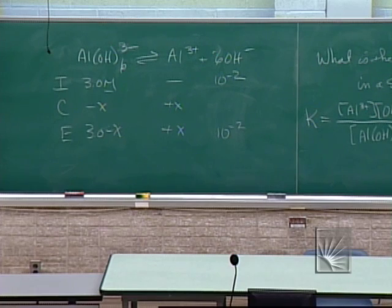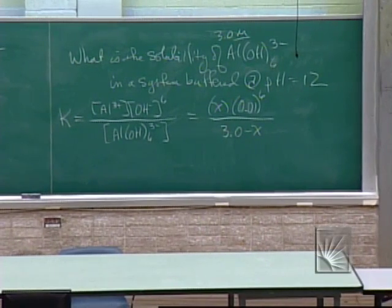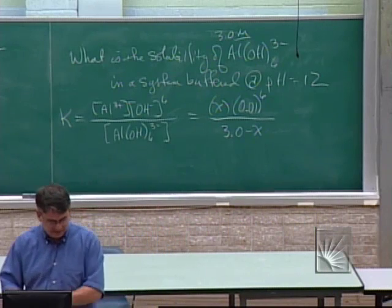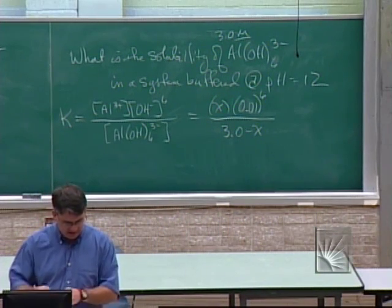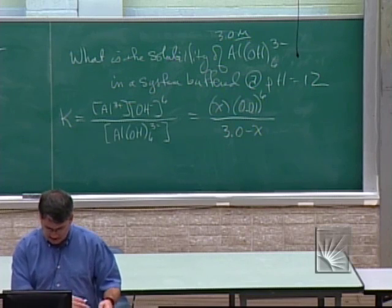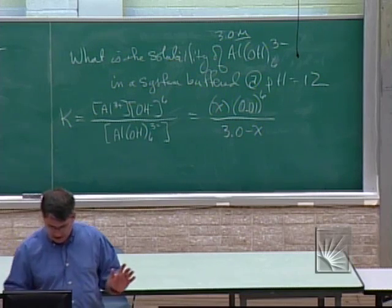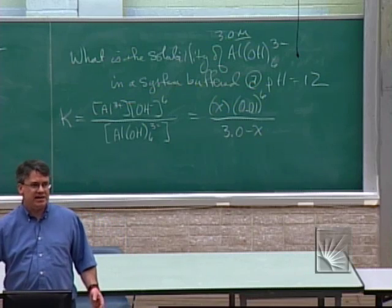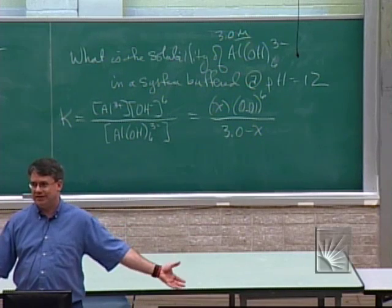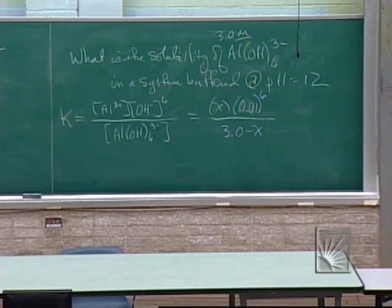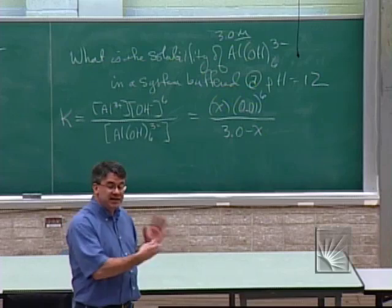A buffer resists changes in pH upon addition of acid or base. So the hydroxide ion concentration is still going to be 10^−2 when equilibrium is reached — the buffer forces it to be that. I still need a value for K; I'd look it up in a data table. And in solving, we're solving for solubility — which brings up a good question: is KSP the same as solubility? No.